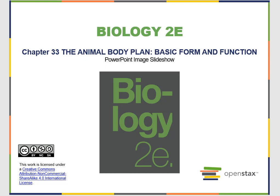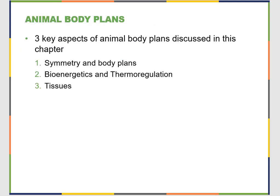Chapter 33 looks at the animal body plan — basic form and function. There are three key aspects to animal body plans: the different types of symmetry and general body plans, bioenergetics, and thermal regulation. It really focuses on the four different tissue types that you see within Kingdom Animalia.